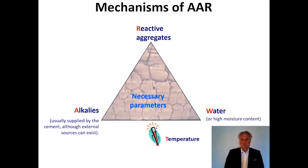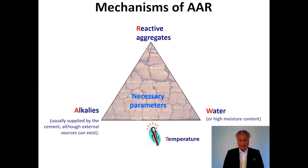Starting with the mechanisms behind alkali aggregate reactions. In order for the reaction to occur, you need to have three components: you have to have reactive aggregates, you have to have sufficient water in the concrete or high moisture content, and you have to have a certain amount of alkalis. If you take away the reactive aggregates, nothing will happen.